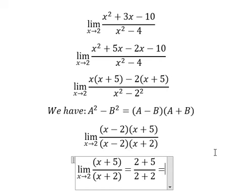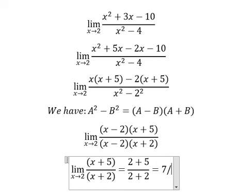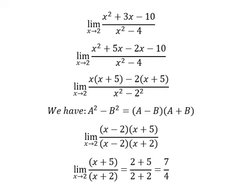We get (2 + 5) over (2 + 2), which equals 7 over 4. This is the final answer. Thank you for watching.